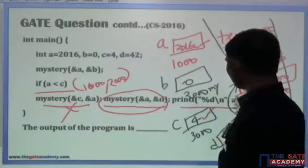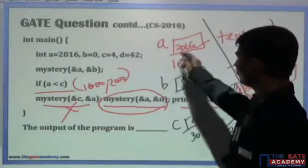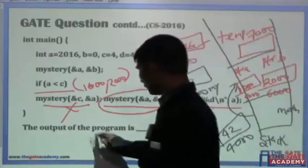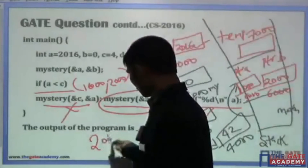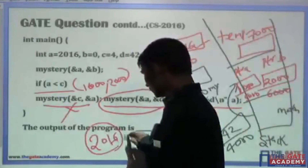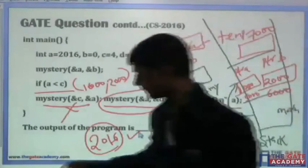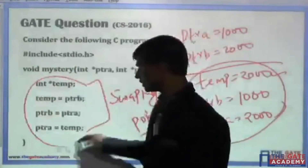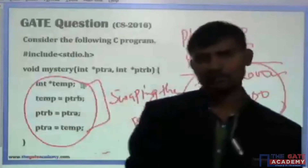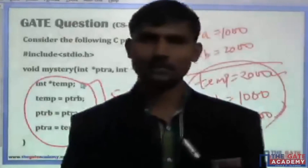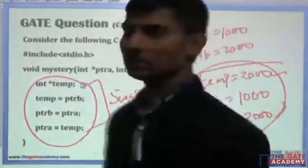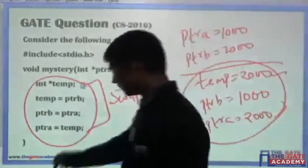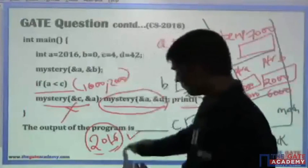After that, we print the value of a. The value of a remains intact — there is no change to it. The value of a is 2016. The key point of this question is that this code does not change the memory locations of the variables in the calling function; it only changes the local pointers. That is the only difference. The answer is 2016.